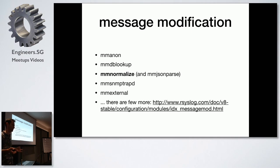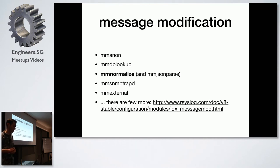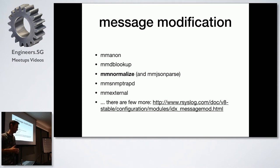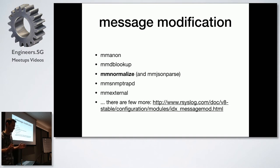When you get messages on input, you can connect them to some rule set which can do processing like checking conditions and setting variables. You can also do message modification — you can't do it right inside a rule set because the language is limited, but you can do it via external modules like a module for anonymizing IP addresses, mmdb lookup for GeoIP extraction, and most interesting here are mmnormalize and mmjsonparse which can parse any structure into JSON and from JSON. We're using it heavily because we have a structured format for our logs and mmnormalize helps us a lot.